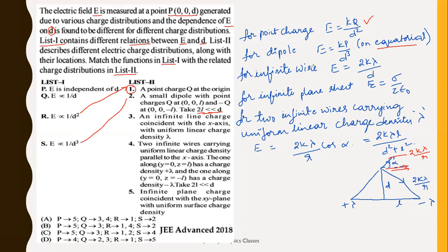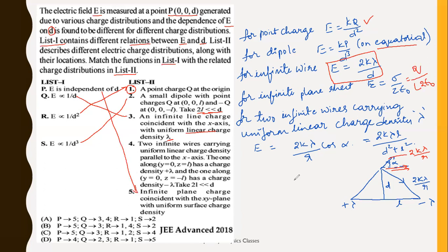For an infinite plane sheet, E = sigma/(2 epsilon₀), which is independent of D. So the infinite plane coincident with the XY plane matches the option where E is independent of D — that is entry 5 matching option P. Now for the fourth case: two infinite wires with uniform linear charge density, one with +lambda and one with -lambda, separated by 2L with 2L much less than D.